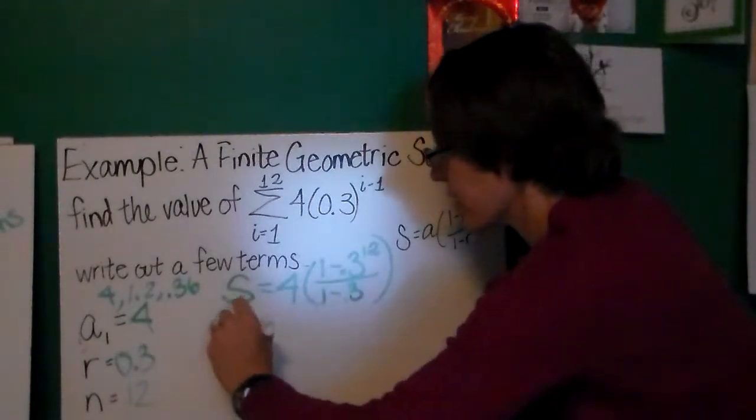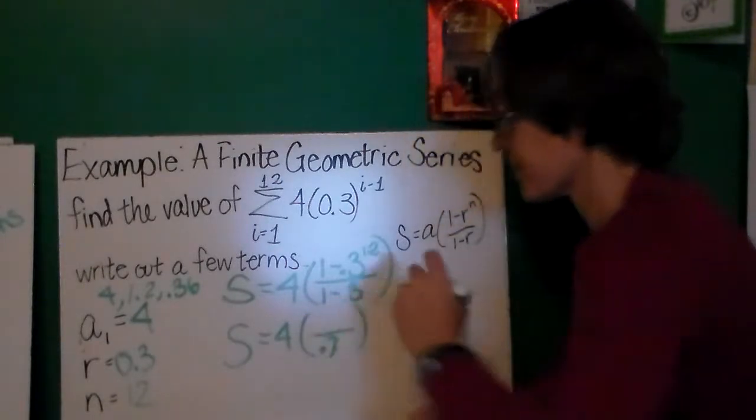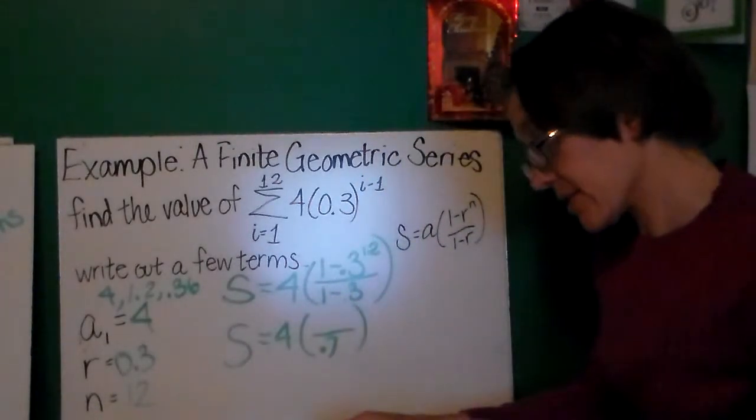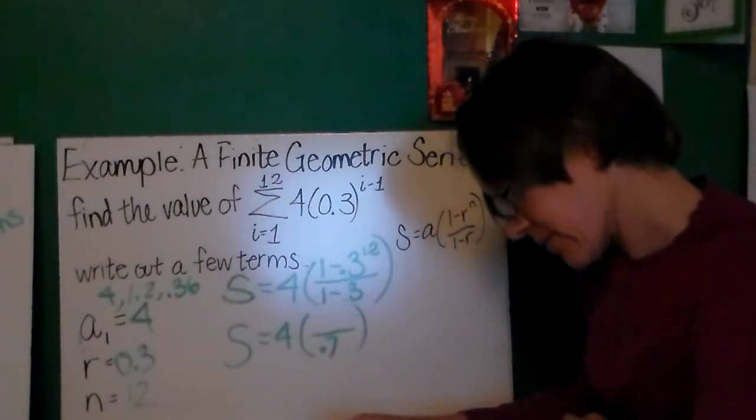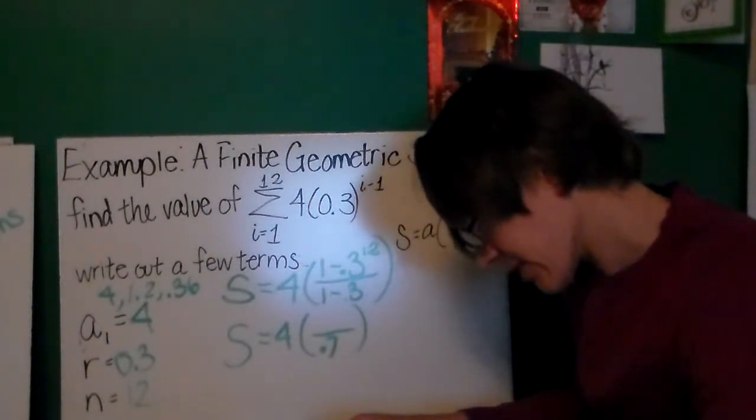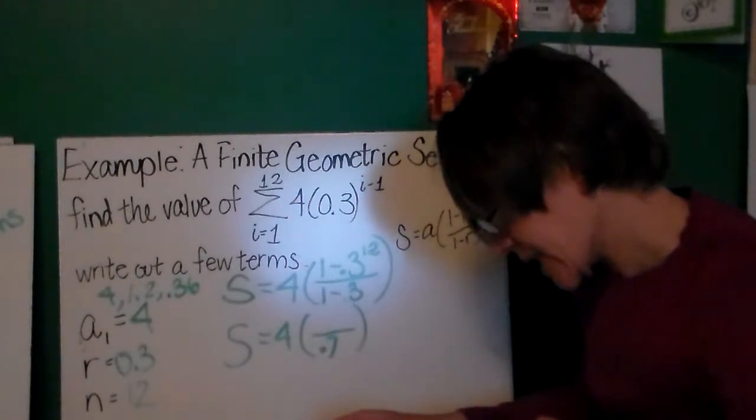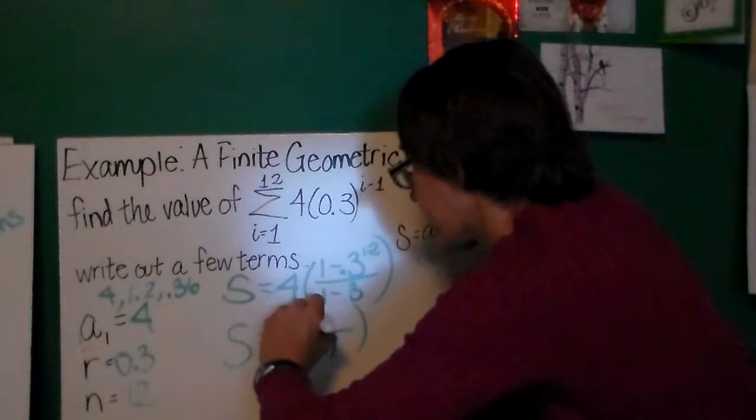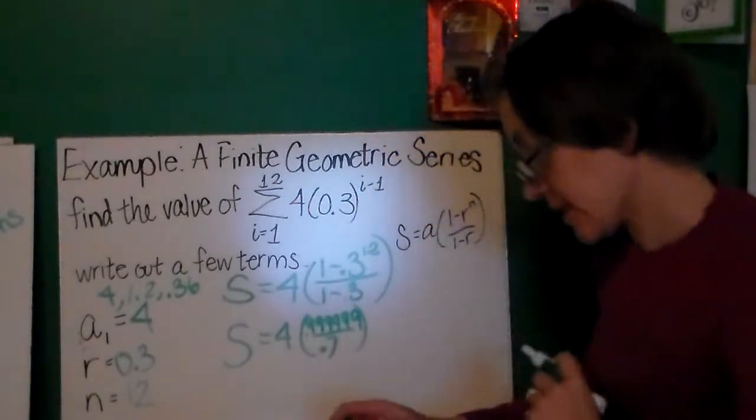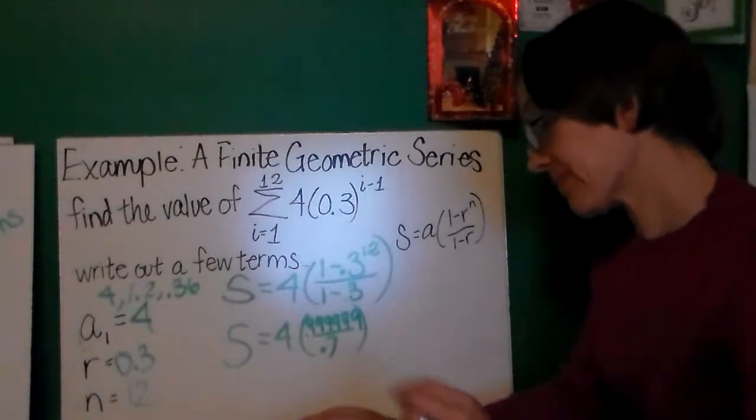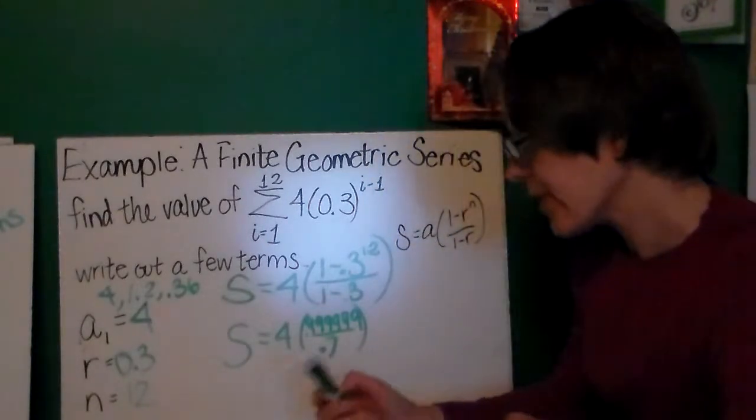Okay, so I'm going to do the easy stuff first here. I know my denominator is going to be 0.7. I don't know what 0.3 to the 12th power is. So I'm going to evaluate that with my calculator. And I get 0.0000531. I'll just subtract that from 1 and I get 0.69994.